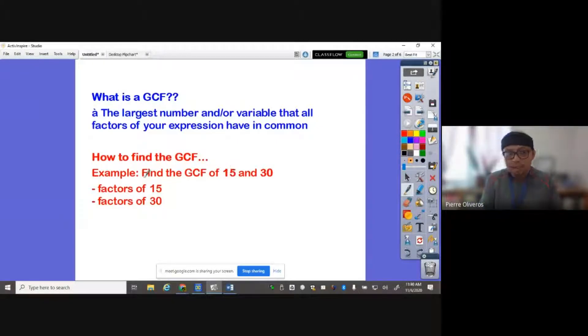So for example, I have here 15 and 30. How do you find the GCF of 15 and 30? What are the factors of 15? We know that 1 is a factor of 15. Everything goes with 1. Is 2 goes to 15? No. Is 3 goes to 15? Yes. Is 5 goes to 15? Yes, because 15 divided by 5 will give us 3.